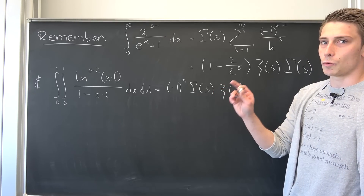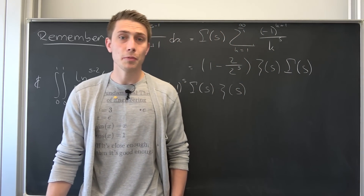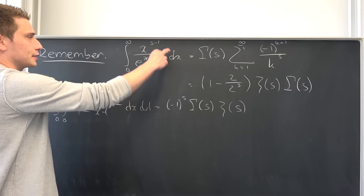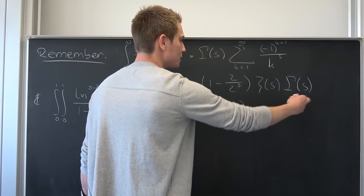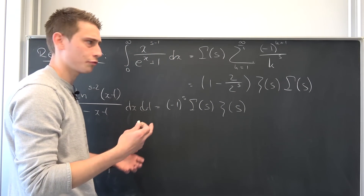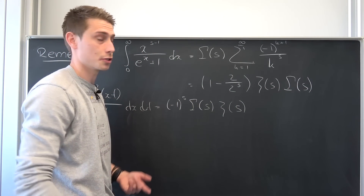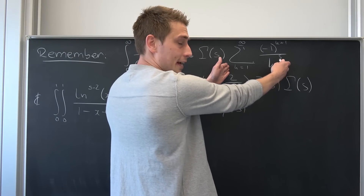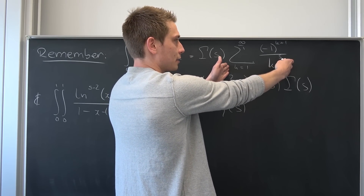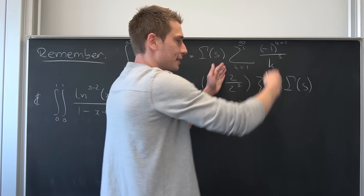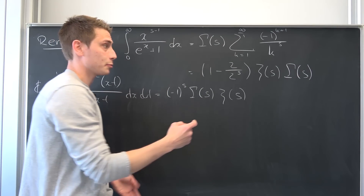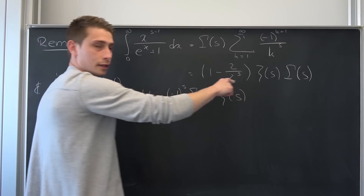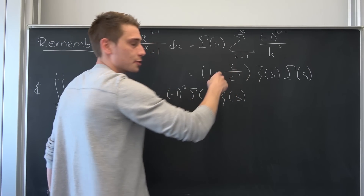So what exactly is the Dirichlet eta function? Well, we were deriving two identities before, but I want to take a look at one certain identity — this one right here. This has been a variant of a Putnam integral; take a look into the description if you don't know what I'm talking about. And we were kind of landing at this alternating Riemann zeta function right here, with this alternating term.